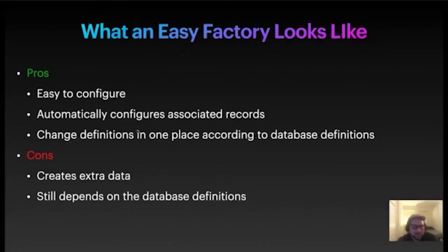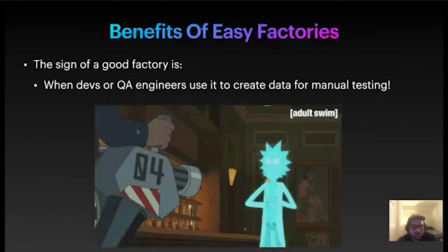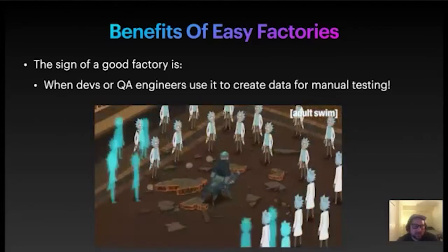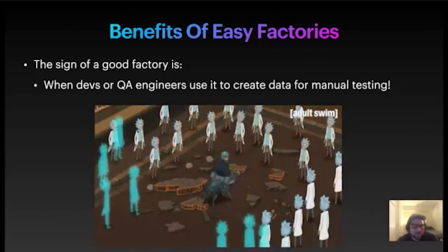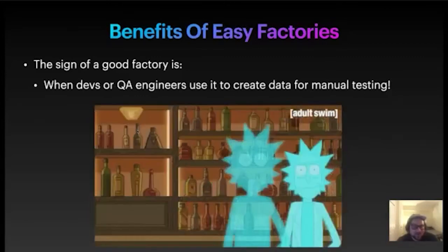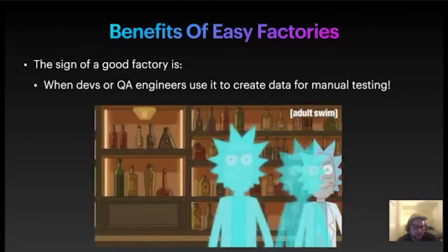The sign of a good factory is when a dev or QA engineer uses it to create data for manual testing. We had a piece of development at ReviewTrackers where we were changing the API that would be used under the hood only if your account had over a million reviews. In order to test this in CI and on your local computer, what the developer did was use the factory and just created a for loop, looping a million times using the factory to create a million reviews. That took five minutes — so now they had the setup for those million reviews so that they could easily test their code.